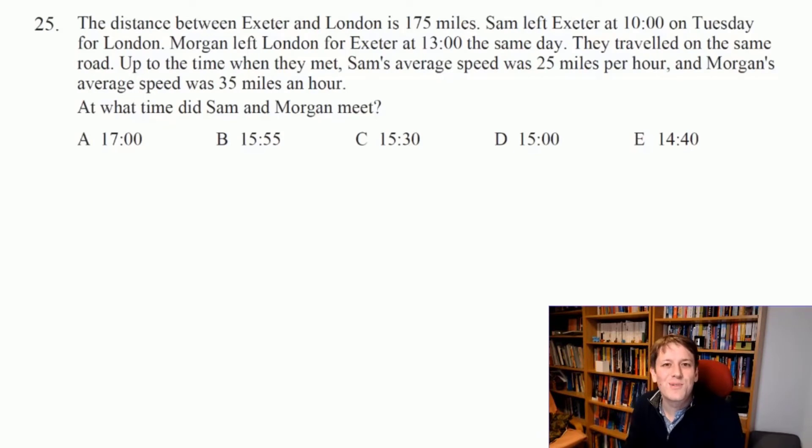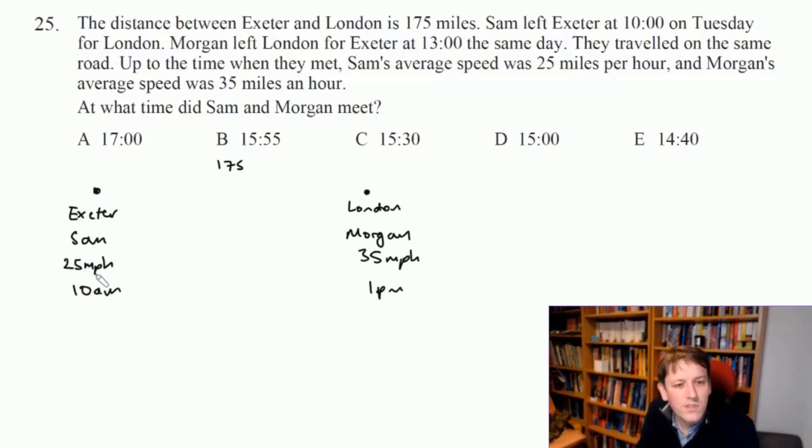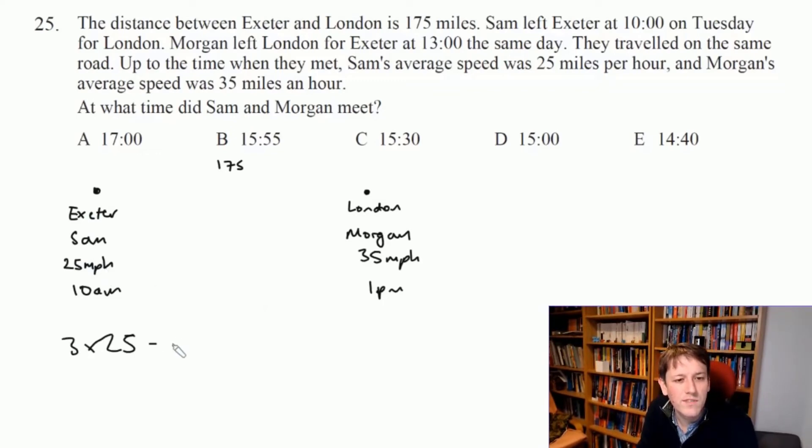Very hard question to finish with. Let's think what's happening here. I'm going to draw a little picture. We've got Exeter on the left here, so Sam starts there and travels at 25 miles per hour. London, we've got Morgan who's going to be traveling 35 miles an hour in the other direction, and there's 175 miles between them. The first simplification I'm going to make: we've got Sam leaving at 10 a.m. and Morgan leaving at 1 p.m.